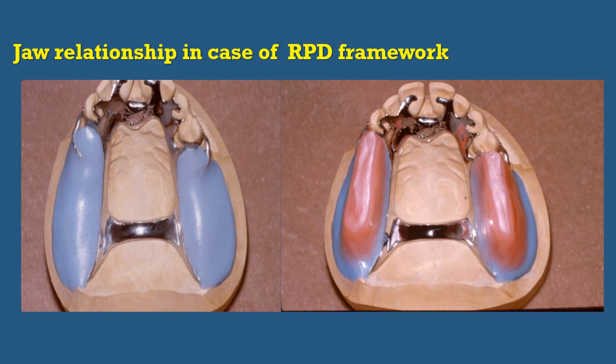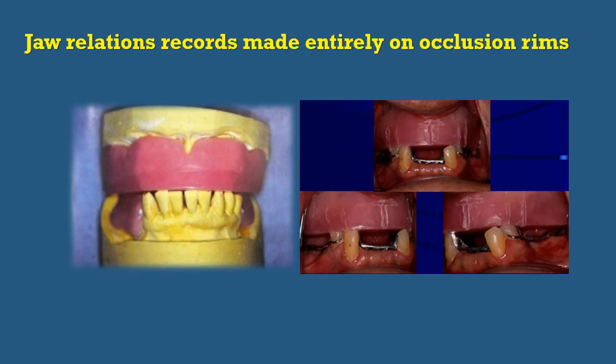If you have a removable partial denture framework, you can make the inter-occlusal record after ensuring all adjustments have been done in the patient's mouth. Replace the framework back in the cast, verify it is correctly positioned, apply a separating medium on the framework, and add auto-polymerized acrylic to the free-end extension areas. After complete polymerization, a wax occlusal rim is added to the acrylic and you proceed to take the inter-occlusal record using wax, zinc oxide eugenol, or silicone impression material.